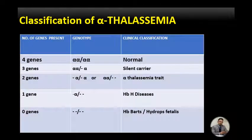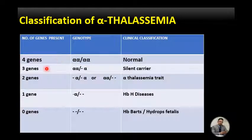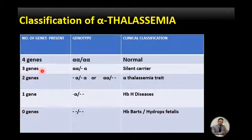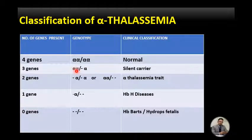For the classification of alpha thalassemia, a normal human being has four alpha chain genes — the normal pattern. When genes are completely or partially deleted, the resulting conditions are: silent carrier, alpha thalassemia trait, HbH disease, and HbBart — also called hydrops fetalis. When three genes are present and one gene is deleted, that is known as the silent carrier.